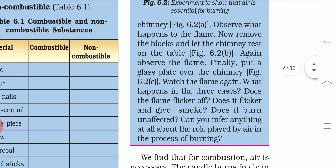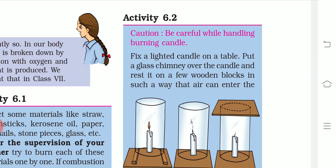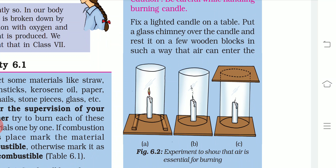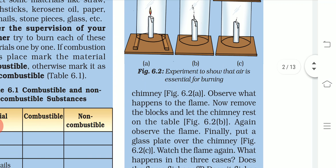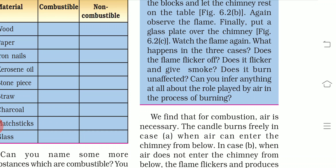Now let us investigate the conditions under which combustion takes place. Burning takes place when oxygen is present. This experiment shows that if you cover a candle with cardboard, you cut the supply of oxygen and the candle blows off after some time. This means that reducing oxygen supply stops the reaction. Any substance needs oxygen for burning.